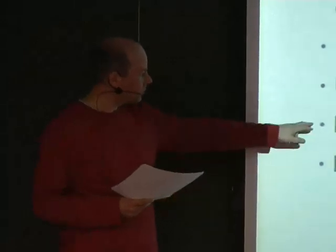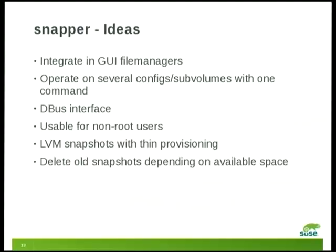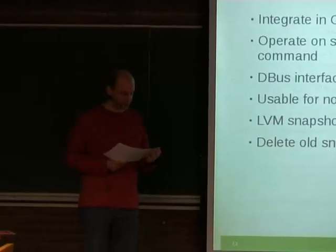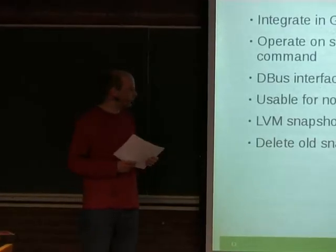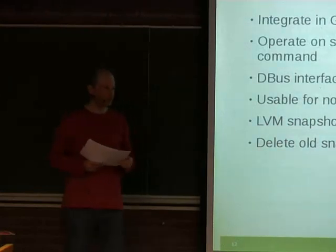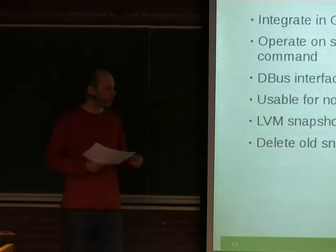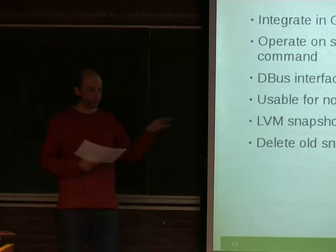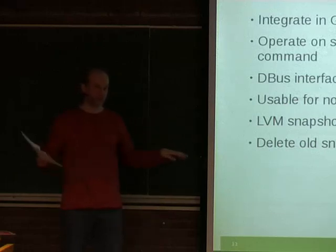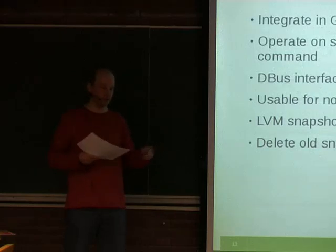Another thing is maybe looking at LVM thin-provisioning snapshots, which are also very efficient. Right now the old LVM snapshots have terrible performance if you have a lot of snapshots — like 100 — because then every change to the main system causes one write for every snapshot you have. Deleting snapshots depending on available space is also something that would be nice.